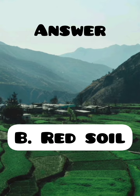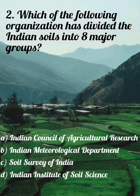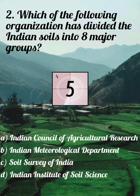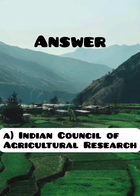Which of the following organizations has divided the Indian soils into 8 major groups? A. Indian Council of Agricultural Research, B. Indian Meteorological Department, C. Soil Survey of India, D. Indian Institute of Soil Science. Answer: A. Indian Council of Agricultural Research.